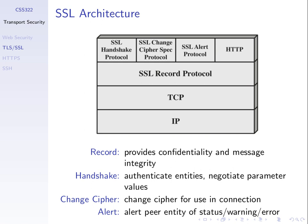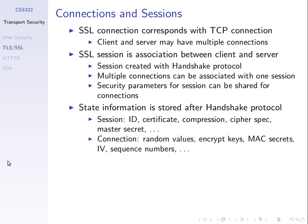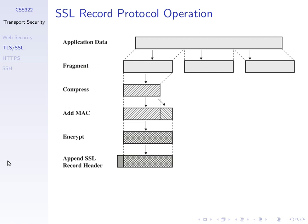Some of these handshake messages are encrypted using the record protocol, not all. And normally our data is encrypted once we set up the session. This is how the record protocol works. When we have a piece of data from the application — for example, my web browser needs to send a GET request to the server — that's the application data. The general approach for the record protocol is to break that into fragments.